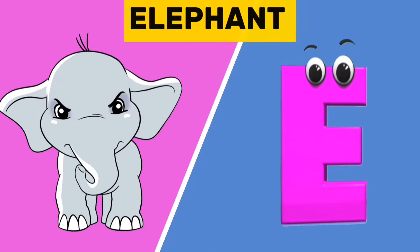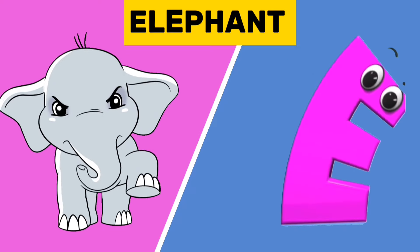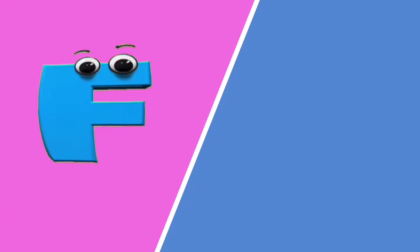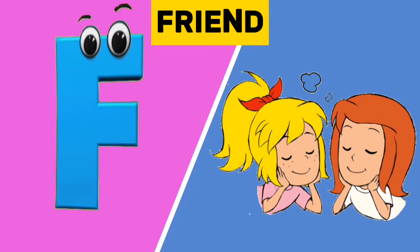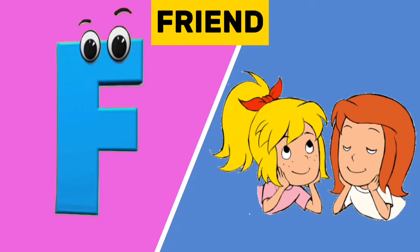E is for elephant. E, e, elephant. F is for friend. F, f, friend.